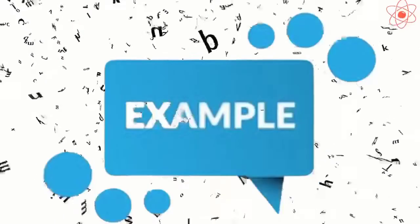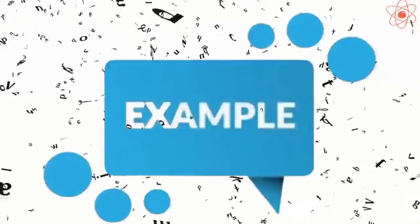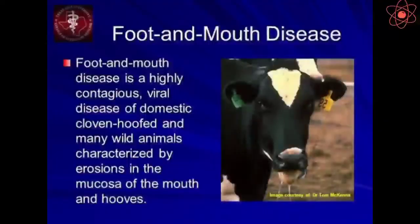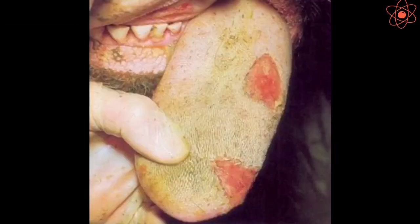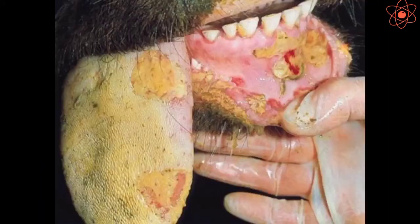Some examples of diseases caused in animals: first, foot and mouth disease. It is caused by a virus. The cattle suffering from this disease get blisters on feet and in the mouth.